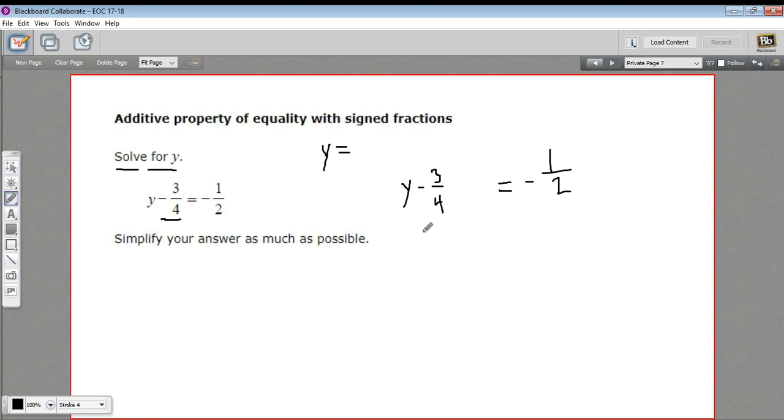So what I'm going to do to get rid of this negative 3 fourths, I'm going to add something to this side, and then I'll have to add it to this side as well. So what would I add to this side to get rid of a negative 3 fourths? Well, I would add 3 fourths because a negative 3 fourths and a positive 3 fourths adds up to 0.